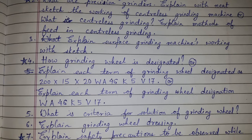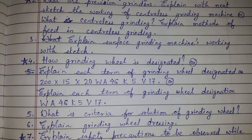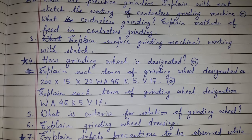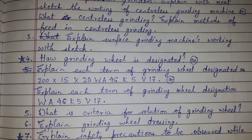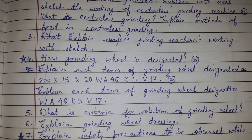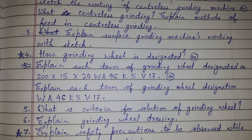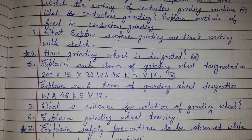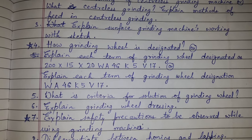How grinding wheel is designated, or it may happen that the coding is given and it is asked to explain each term of grinding wheel designation. Examples include: 200 x 15 x 20 WA46 K5 V17, or another example asked in one of the examinations is WA46 K5 V17. This is grinding wheel designation.